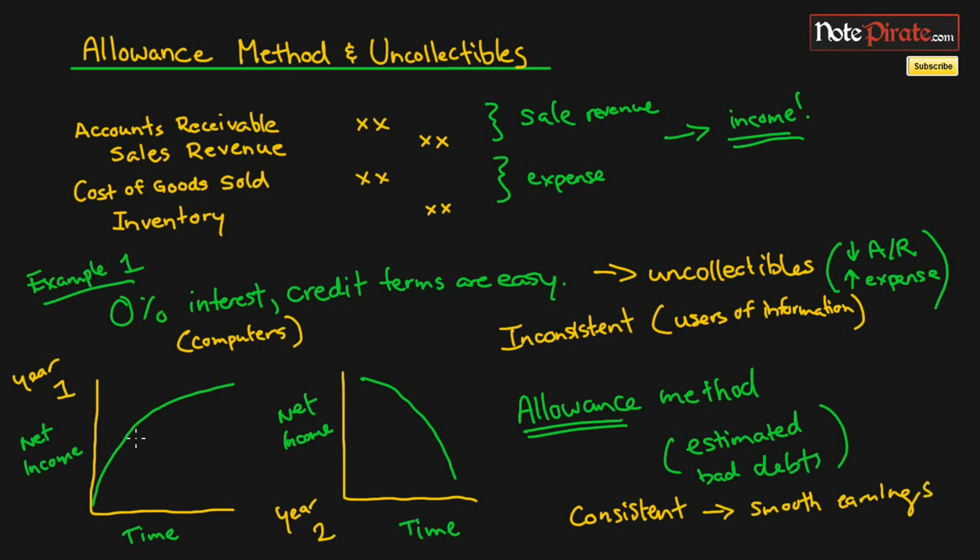If I were to redraw these graphs, it would look something more like this: instead of a dramatic increase and a dramatic decrease, it might be more of a consistent amount of net income being generated in year one and year two. That actually will reflect the situation rather than confuse investors and other users of information. We'll be talking about the allowance method in the next tutorial.